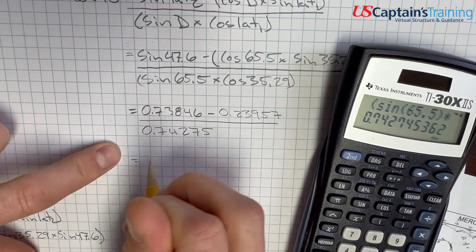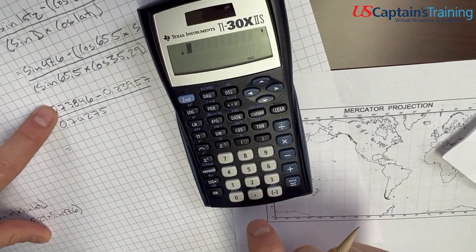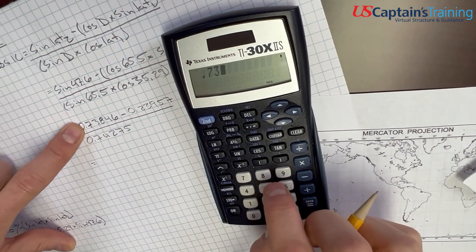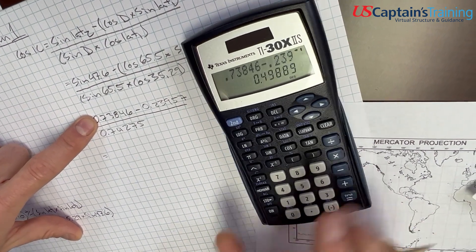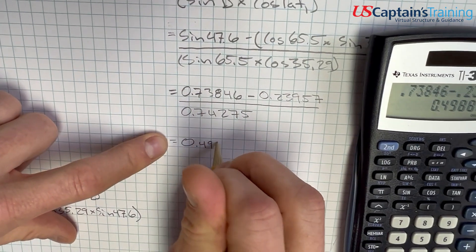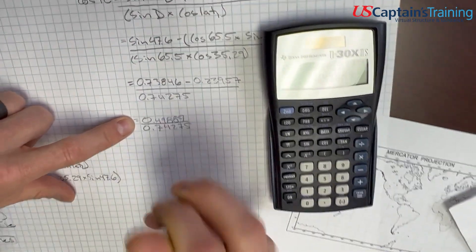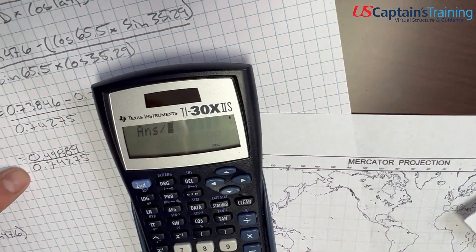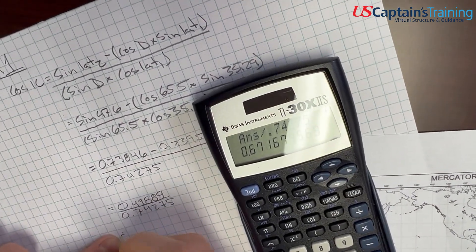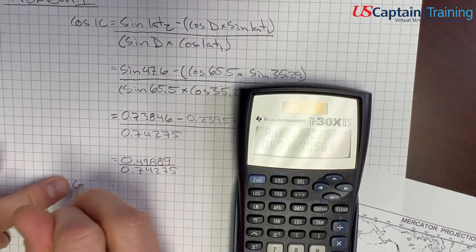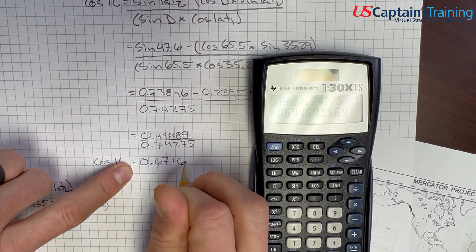And, now we're going to simplify it a little bit further, and we're going to say 0.49889 divided by 0.74275 equals, and again we're, cosine initial course equals 0.67168.